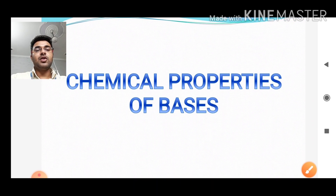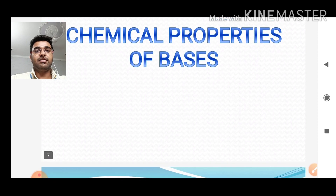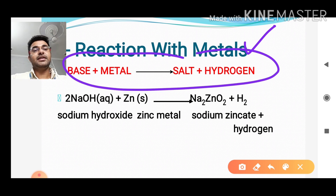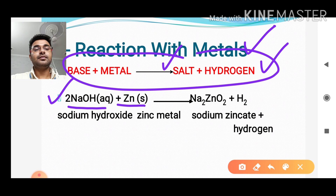Now let us look at some chemical properties of bases. Like acids react with metals and metallic oxides, what will happen when a base reacts with a metal? When a base reacts with a metal, they give salt and hydrogen. For example, when sodium hydroxide NaOH reacts with zinc metal, they form sodium zincate and hydrogen gas is liberated.